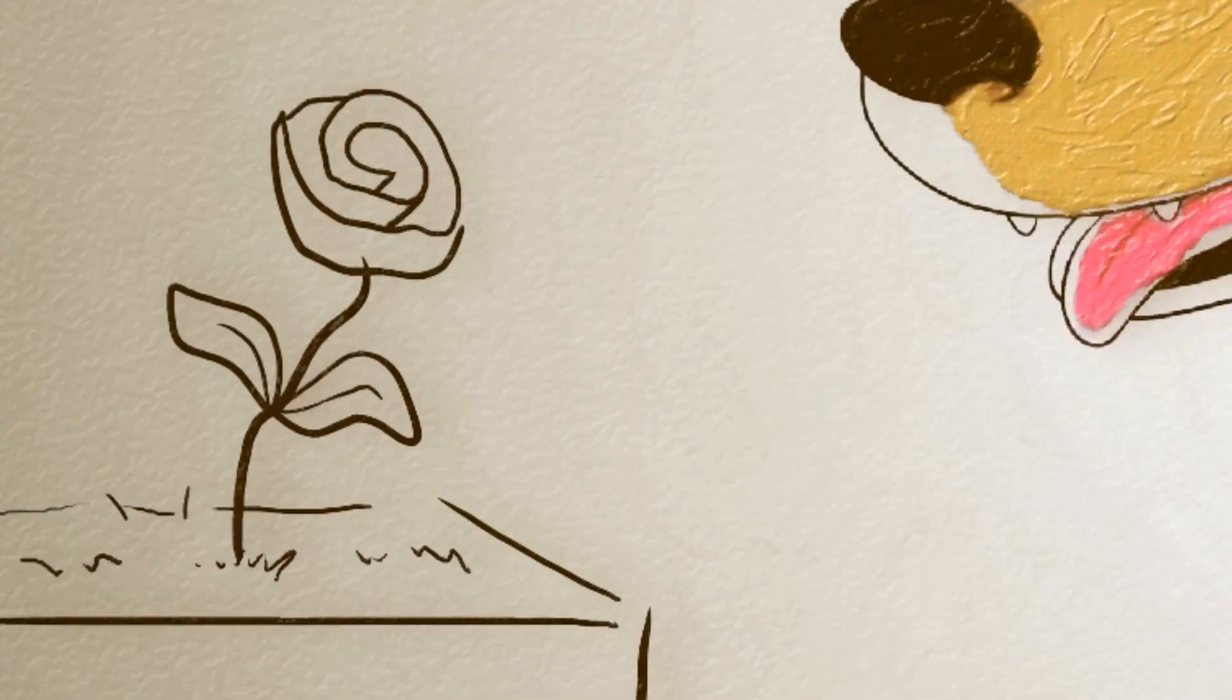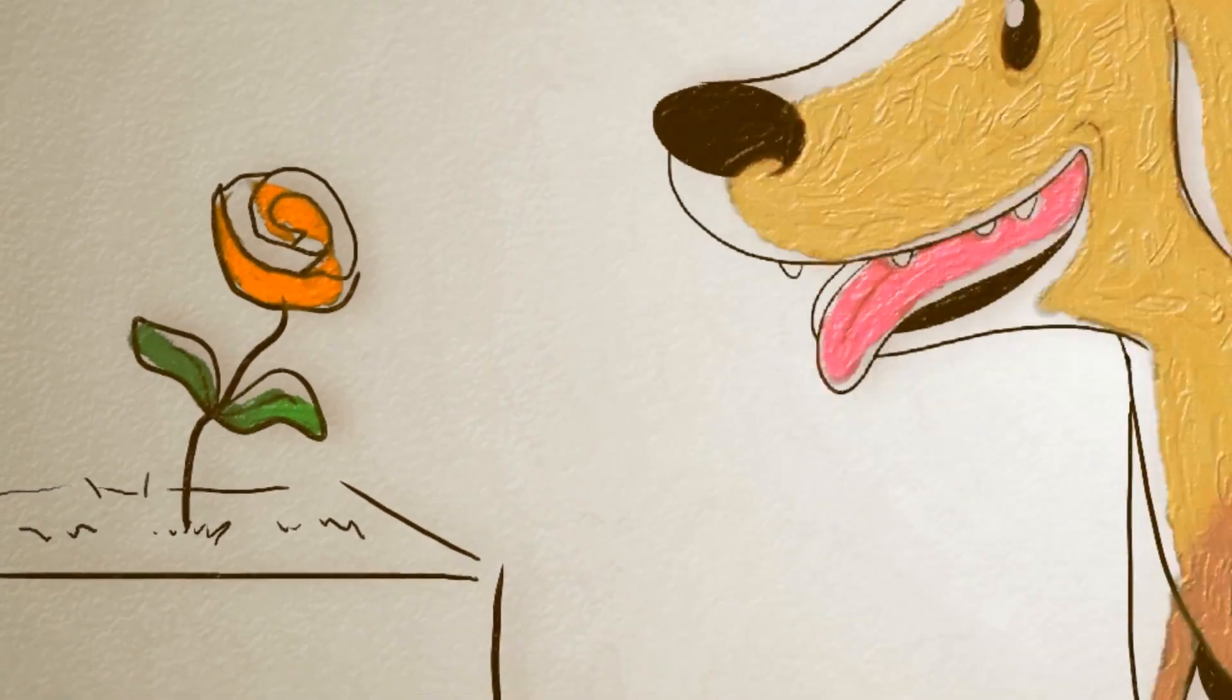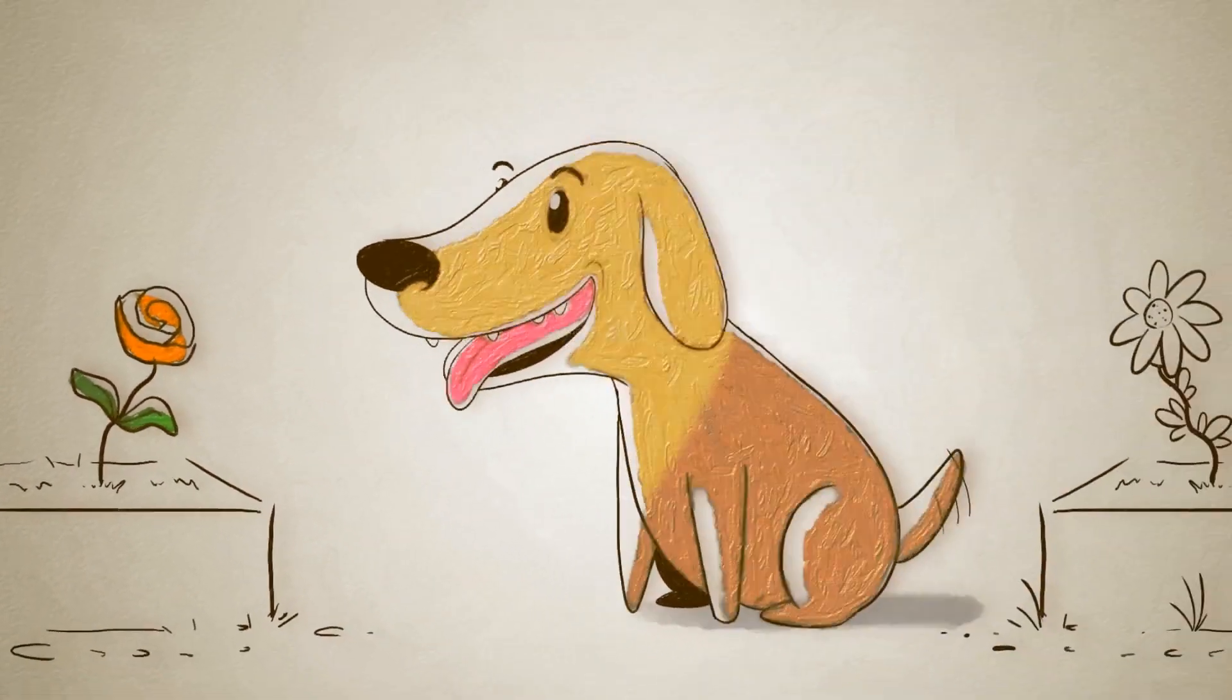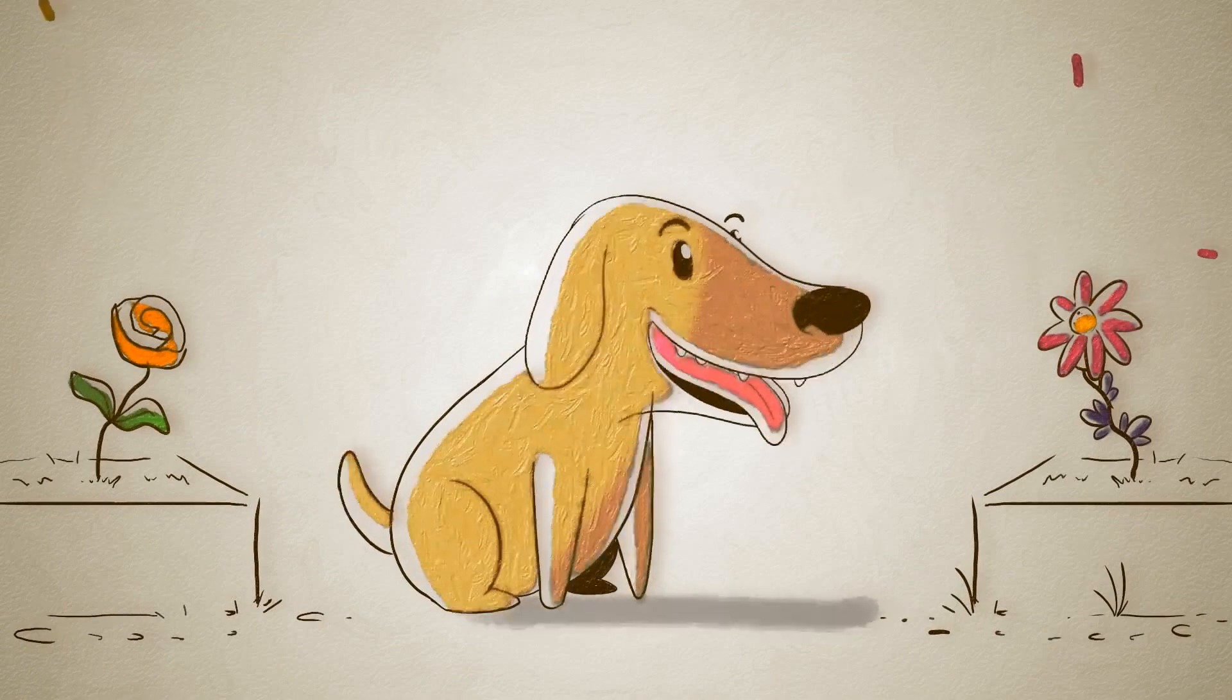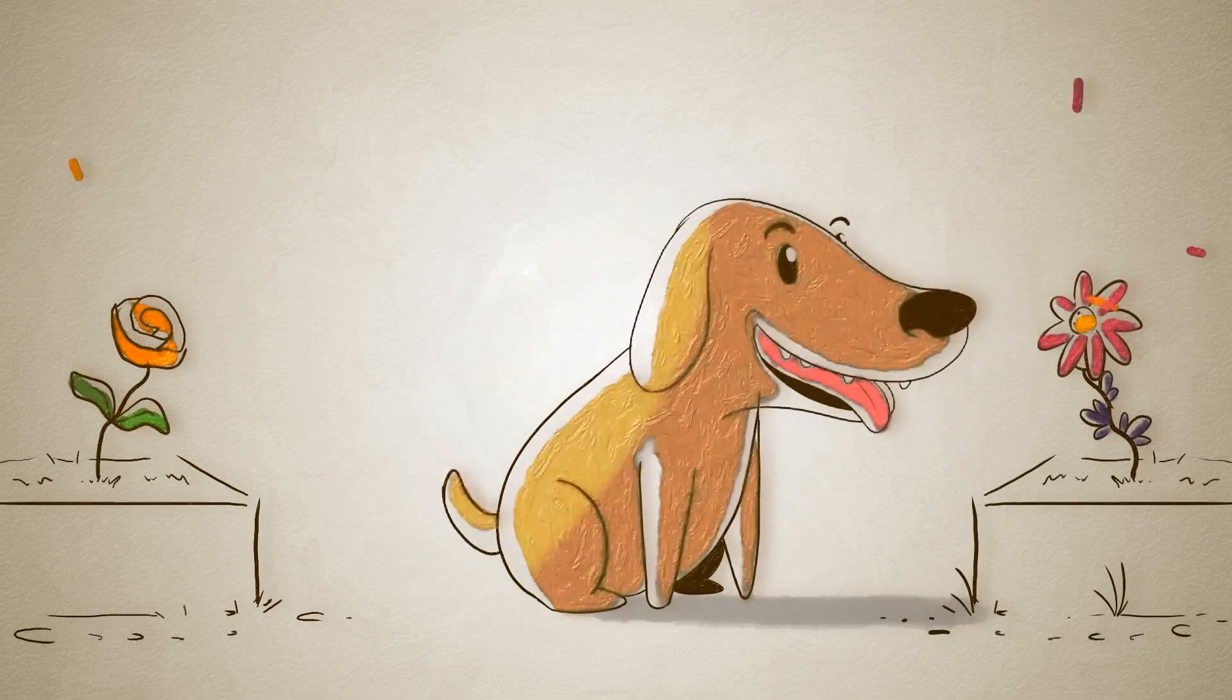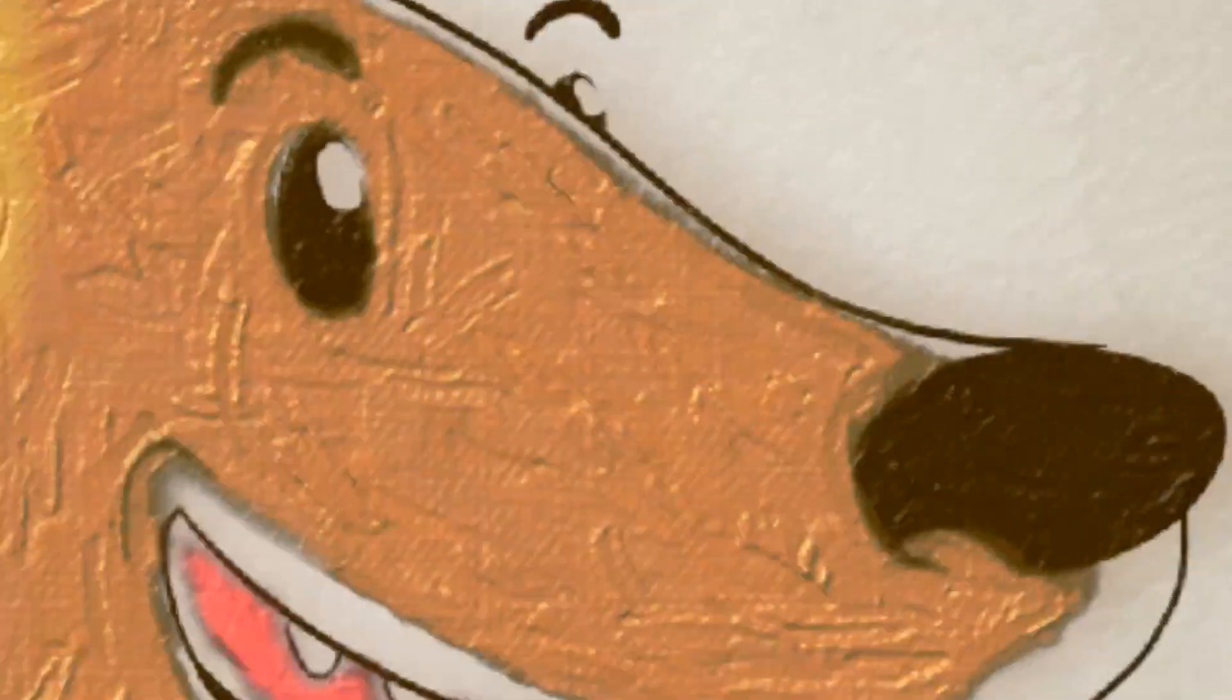The ability to smell separately with each nostril, smelling in stereo, helps to determine the direction of the smell's source, so that within the first few moments of sniffing, the dog starts to become aware of not just what kinds of things are out there, but also where they're located.